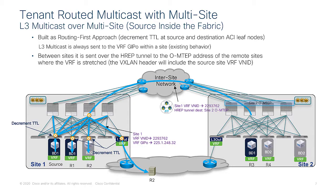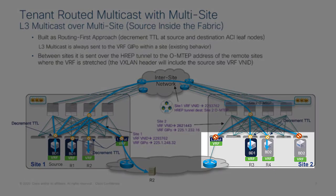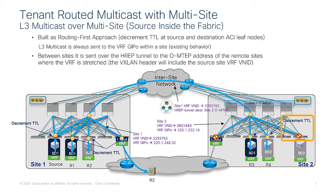If there is no receiver in the destination site, the spine drops the traffic. If there are active receivers that have expressed interest, the spine forwards the packet inside the site to all local leaf nodes where the VRF has been deployed. On the egress leaf, TTL is decremented again. This double decrement is important: if a source and receiver are in the same BD and use an application that generates packets with TTL=1, they will not be able to communicate via TRM, whereas they would have been able to via BUM forwarding.